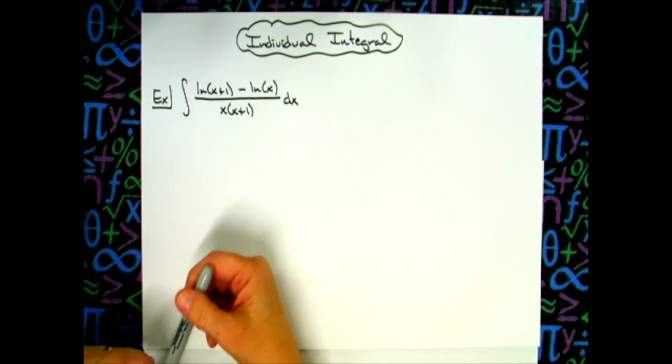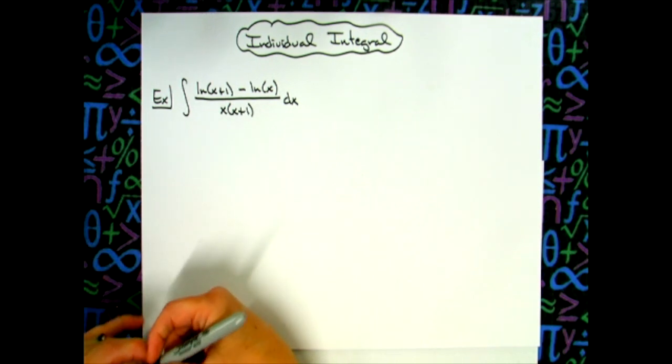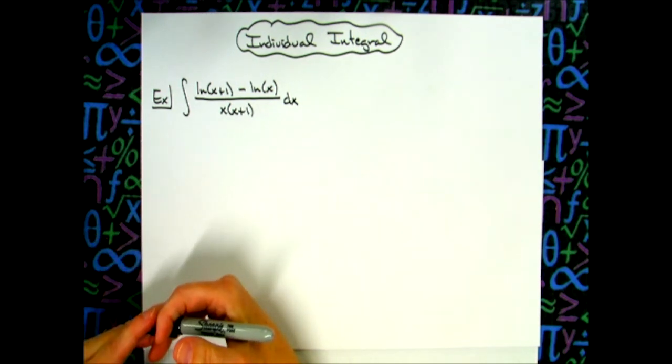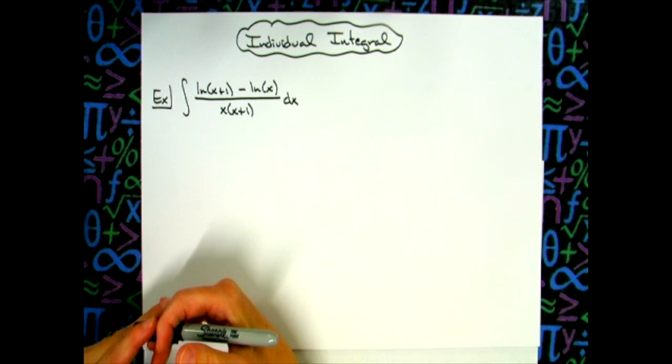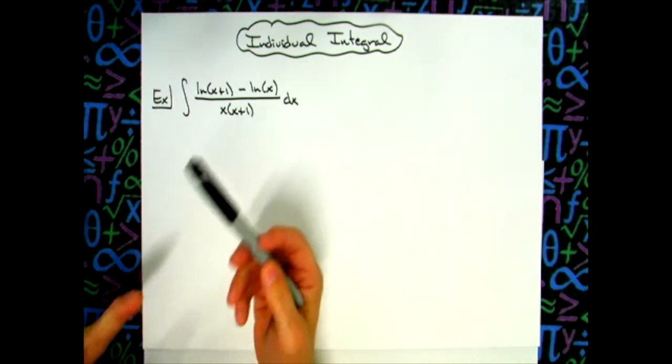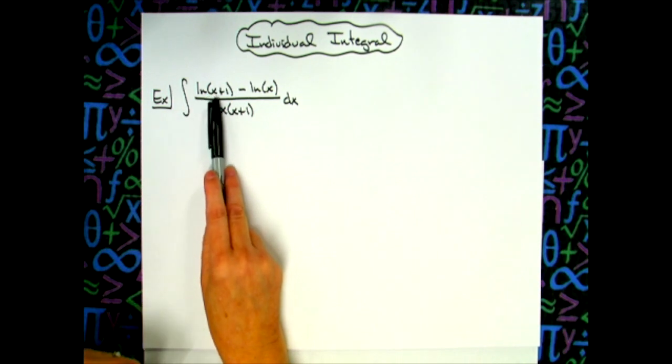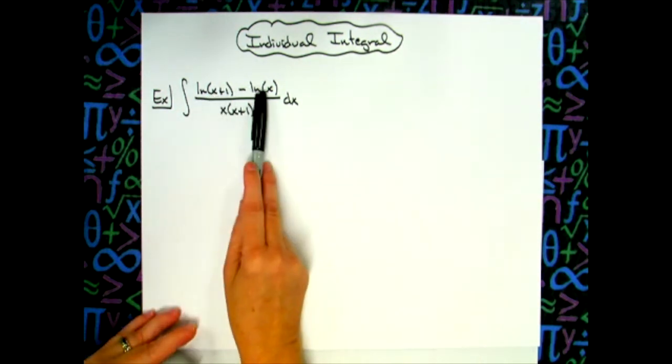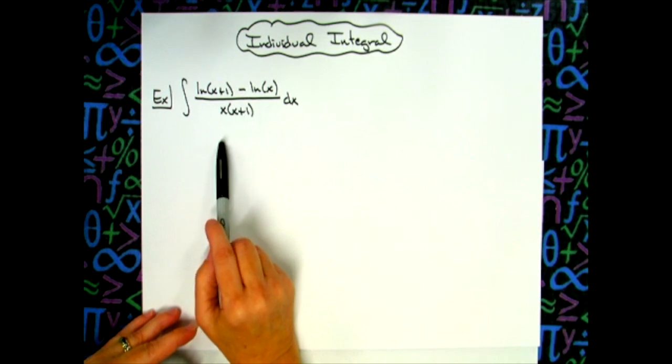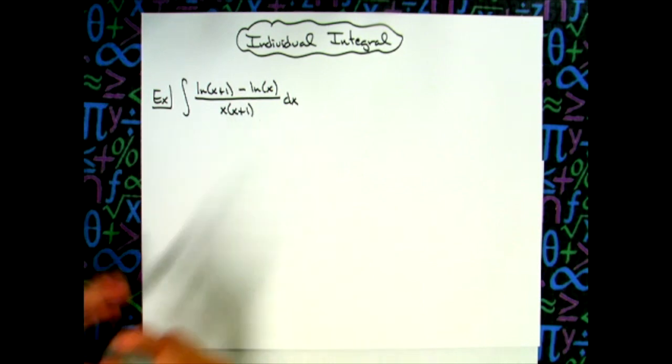The simple fact that we've got those natural logs in there makes the problem look a little bit more complicated than it really is. This is going to be just a basic straight u substitution. And keeping in mind that when you take the derivative of the natural log function, it's u prime over u, which is going to work out really nicely for the way things are going to cross out with that denominator.